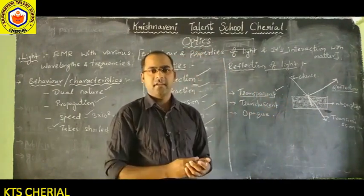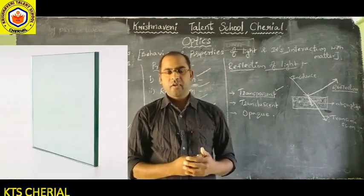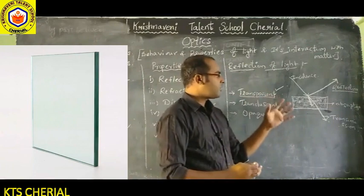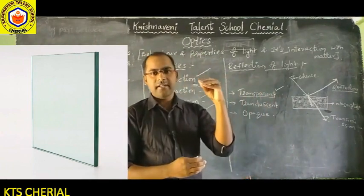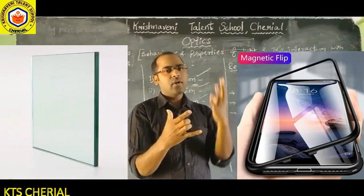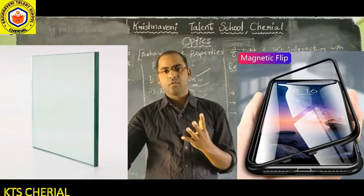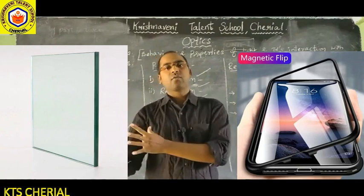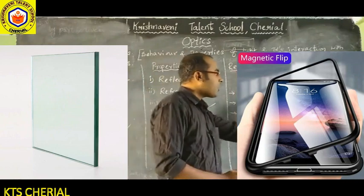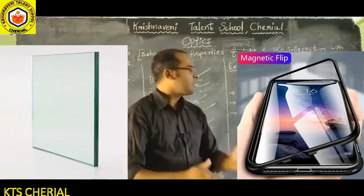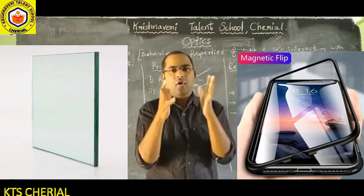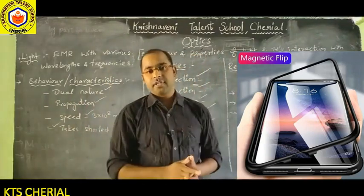Transparent materials — take a clear glass. When light hits it, almost all the light is transmitted through it. The transmission rate is much higher than the absorption rate and reflection rate, which is why the object is called a transparent object.